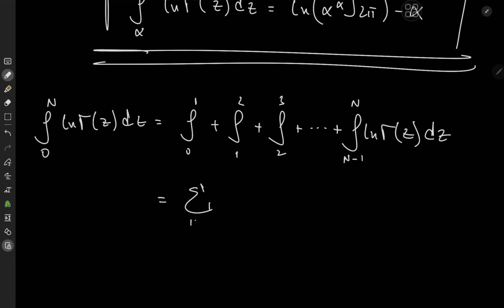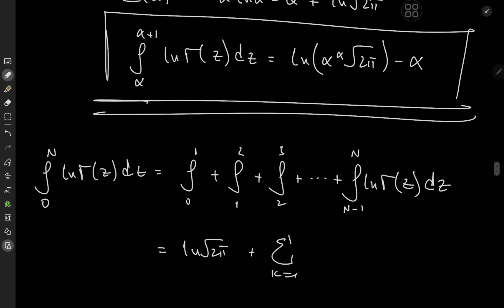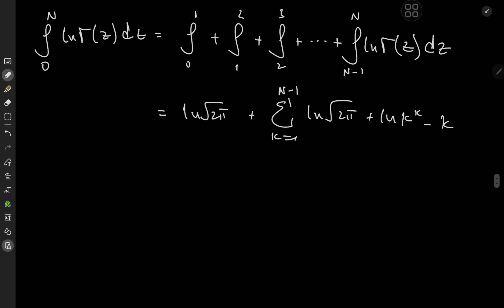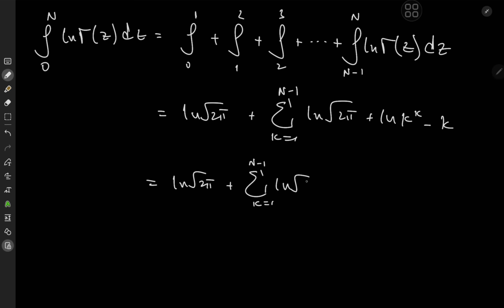The integral from 0 to 1 is just log√(2π), so we single that out. The remaining integrals form a sum over k from 1 to n−1 of the integral from k to k+1, each equal to log(k^k · √(2π) · e^(−k)). Summing the log√(2π) terms gives n·log√(2π) in total. The sum of k from 1 to n−1 equals n(n−1)/2, contributing −n(n−1)/2.